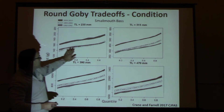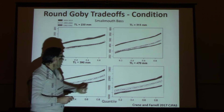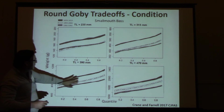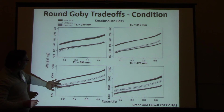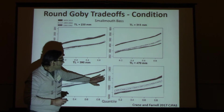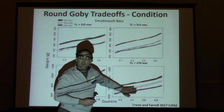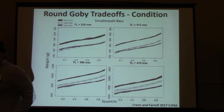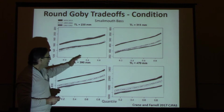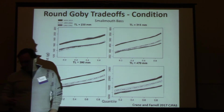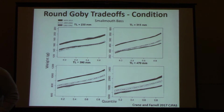We also see a similar pattern with larger fish. What we were really interested in is that we see a significant difference emerging for the dreissenid period — positive effects of dreissenids on condition in smallmouth bass. It told us something we didn't fully realize: that there were also effects of dreissenids on bass condition.